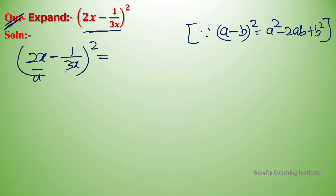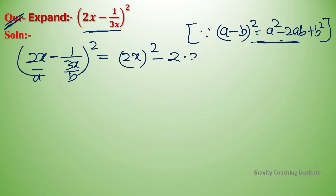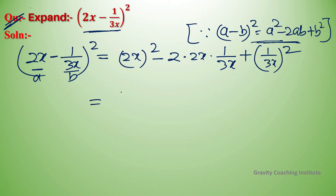Here, a = 2x and b = 1/3x. Substituting: (2x)² minus 2 times (2x) times (1/3x) plus (1/3x)², which gives 4x² minus the middle term plus 1/9x².